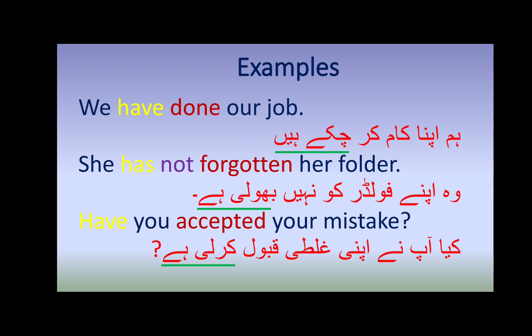In some sentences there is 'have' and in some sentences there is 'has.' Why? Due to the situation of the subject. When there is a plural subject, we put 'have' as the helping verb — 'we' is the plural subject. 'She' is the singular subject, so we put 'has' as the helping verb. And 'you' is the personal pronoun, so we put 'have' as the helping verb.